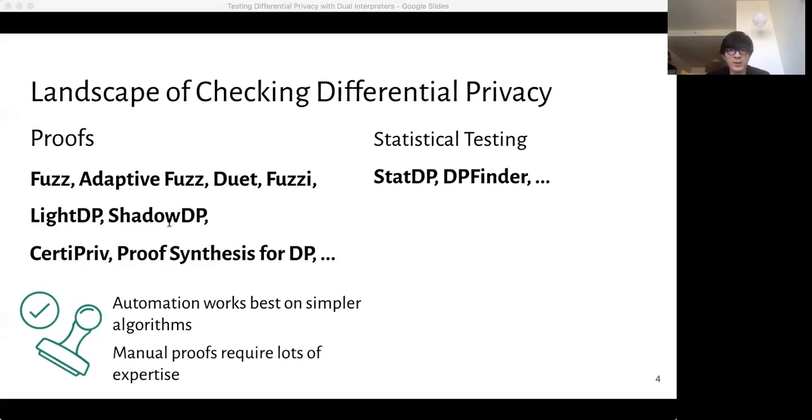The statistical testing tools give strong evidence of non-differential privacy because these are counter-examples. However, they require appropriate heuristics for building approximations of the underlying distribution of outputs and use these heuristics to compare these output distributions to check for violations of DP. And different algorithms might require different heuristics.